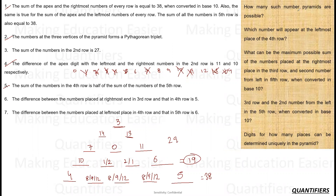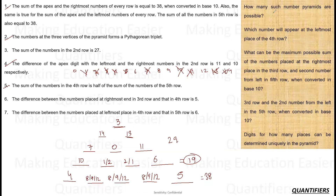Question 1: How many such number pyramids are possible? The three elements in the uncertain row can be arranged in 3! = 6 ways, and the two elements in another uncertain pair can be arranged in 2! = 2 ways. The total number of valid pyramids is 6 × 2 = 12.